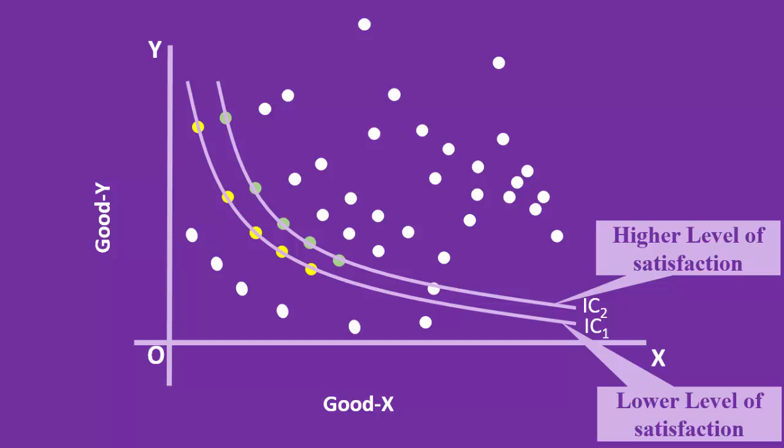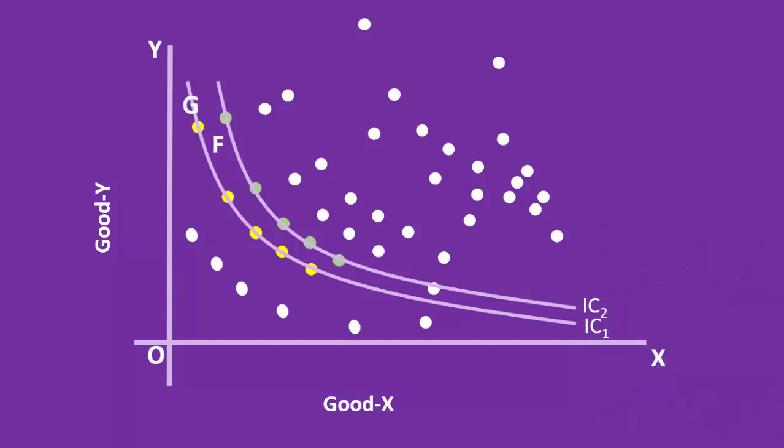The second assumption comes to our rescue. Consumer has the ability to rank his preferences. For this, let us take two combinations, F and G.